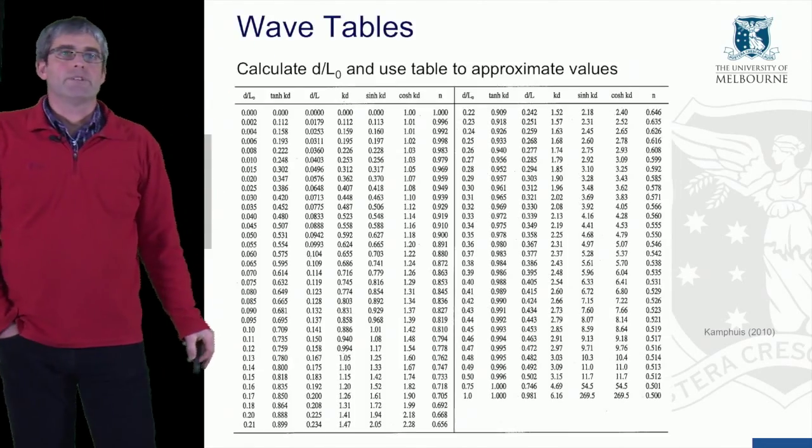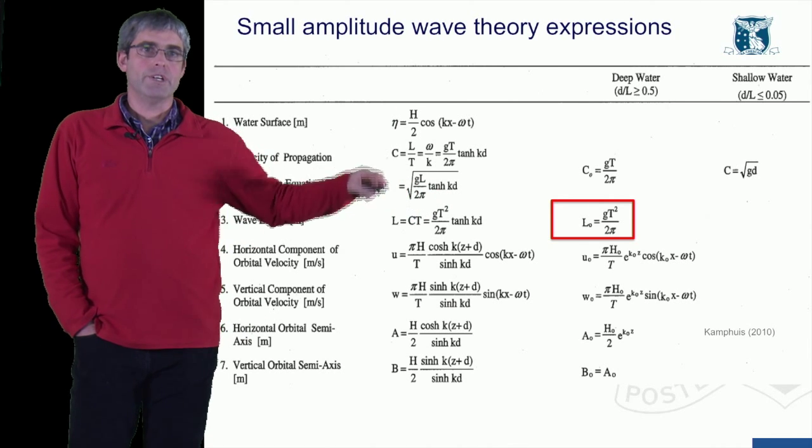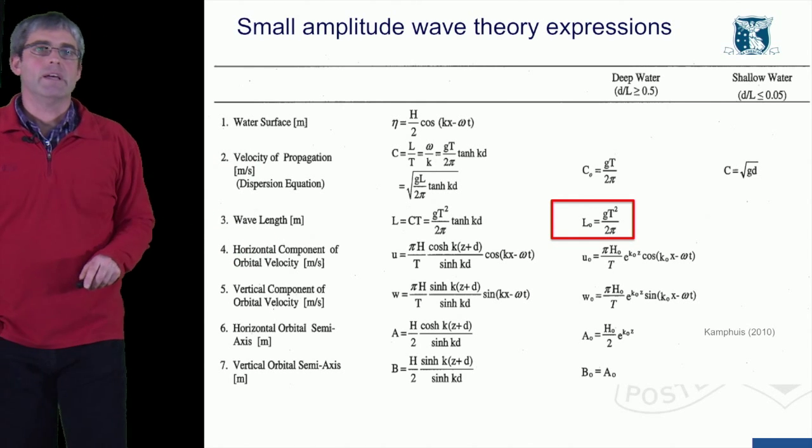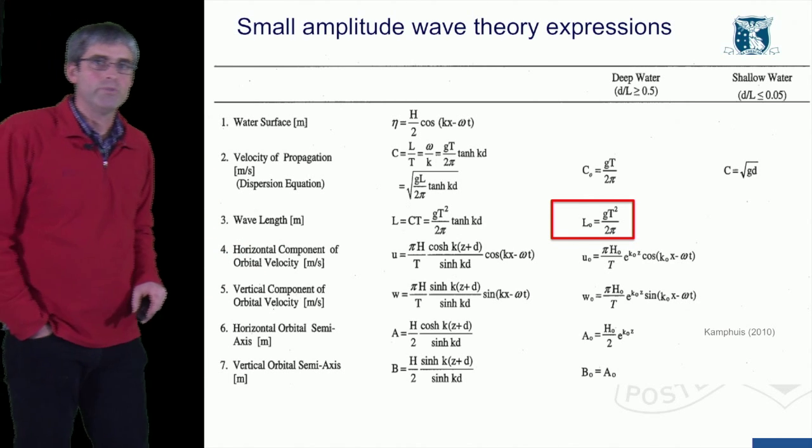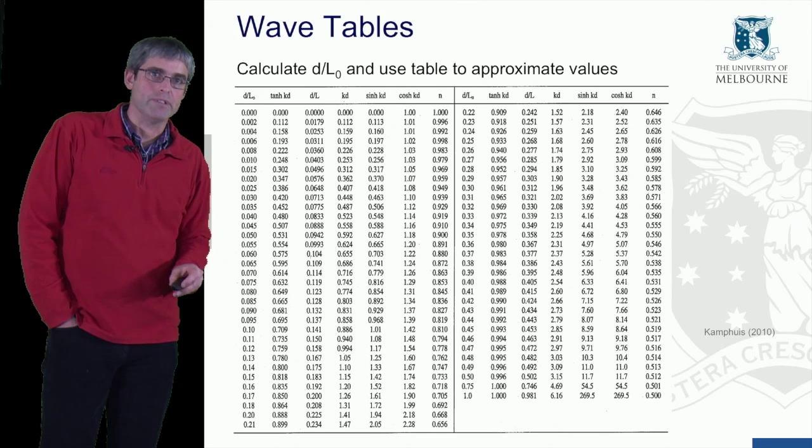If we go back to those wave expressions, we can see the various terms here in the equation. So we can calculate then the velocity of propagation, the wavelength, the horizontal component of the orbital velocity. And what is that? Let's just go on a couple of slides and I'll explain that one to you.